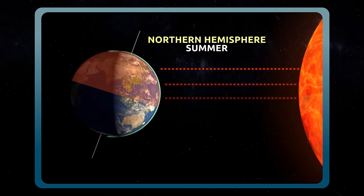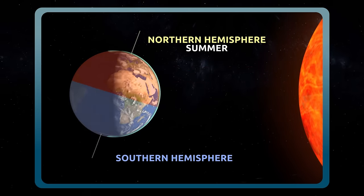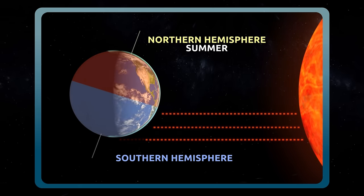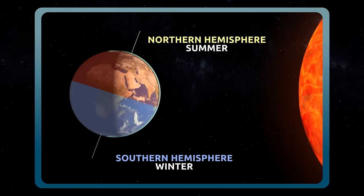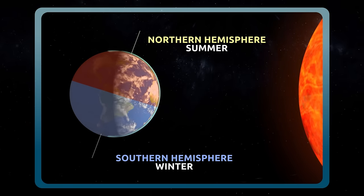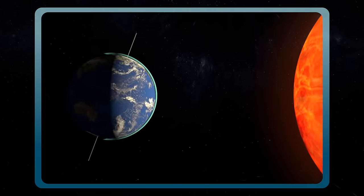By contrast, the other hemisphere is less inclined, so sunlight is less direct. That's why it's colder and it's wintertime. Here we can see that it's summertime in the northern hemisphere and wintertime in the southern hemisphere.